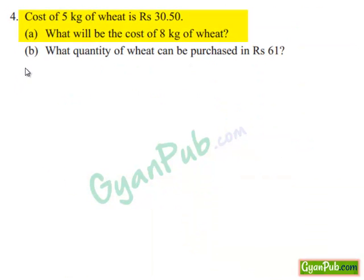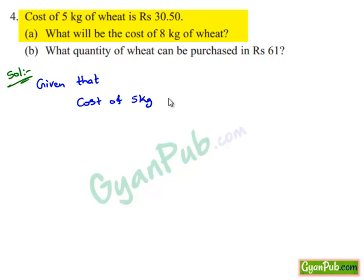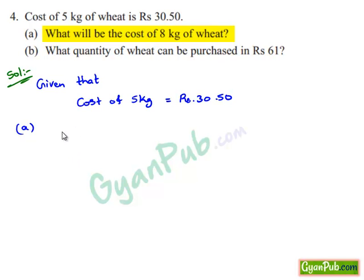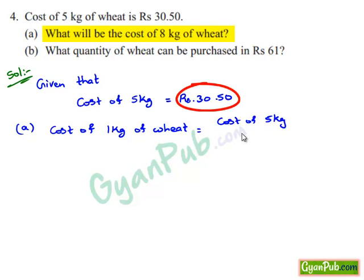Moving on to the 4th question. Cost of 5 kg of wheat is Rs. 30.50. What will be the cost of 8 kg of wheat, and what quantity of wheat can be purchased for Rs. 61? Given that cost of 5 kg of wheat is Rs. 30.50. First, find cost of 1 kg of wheat, which is cost of 5 kg divided by quantity of wheat.